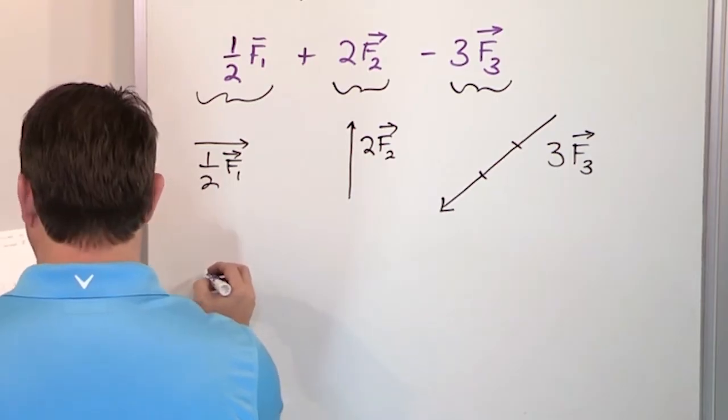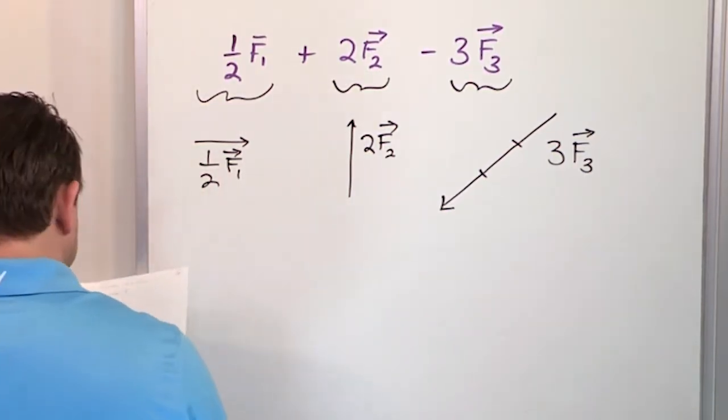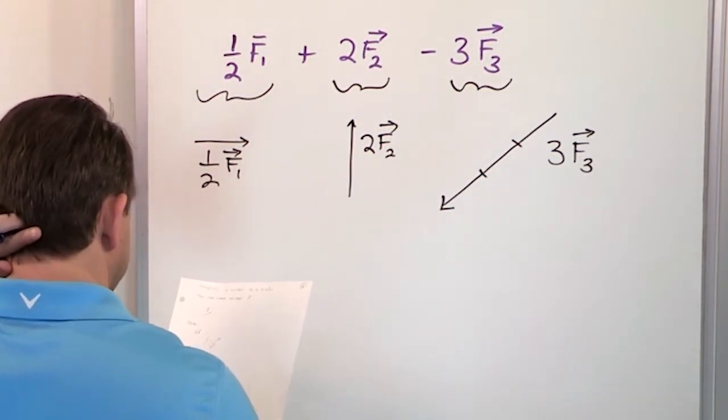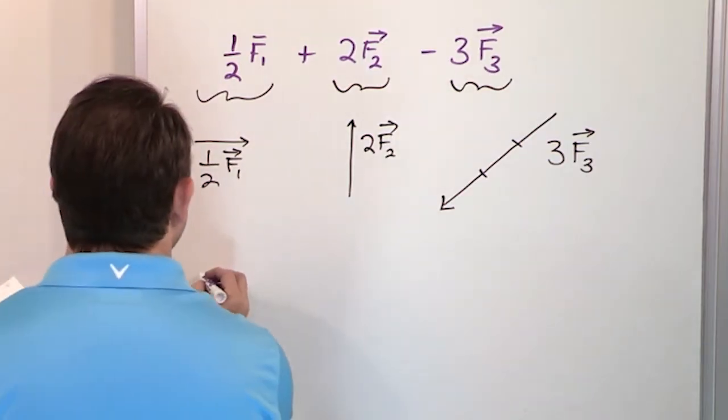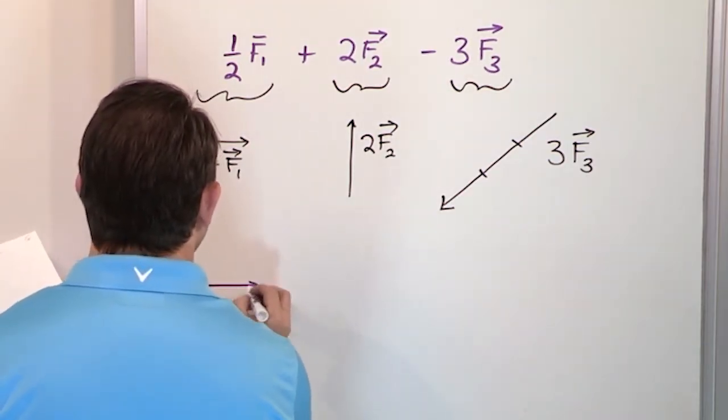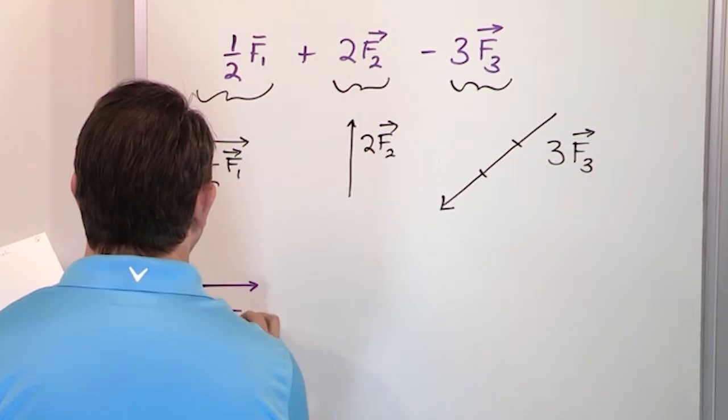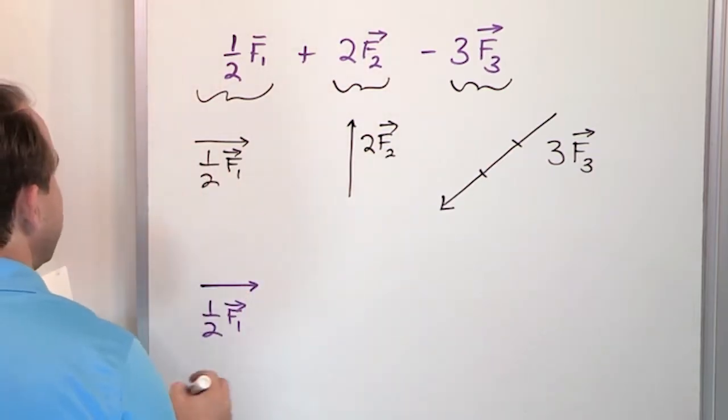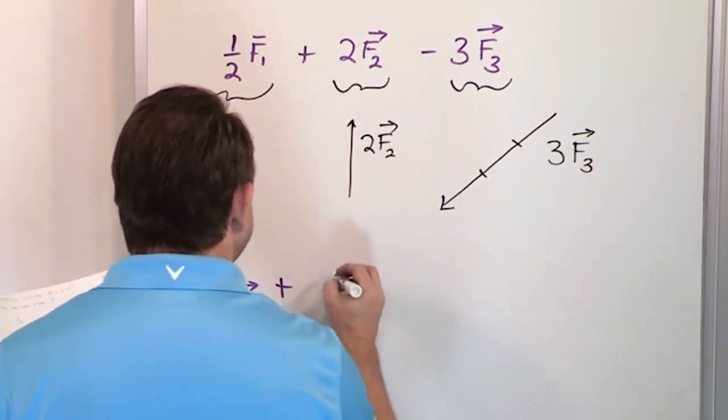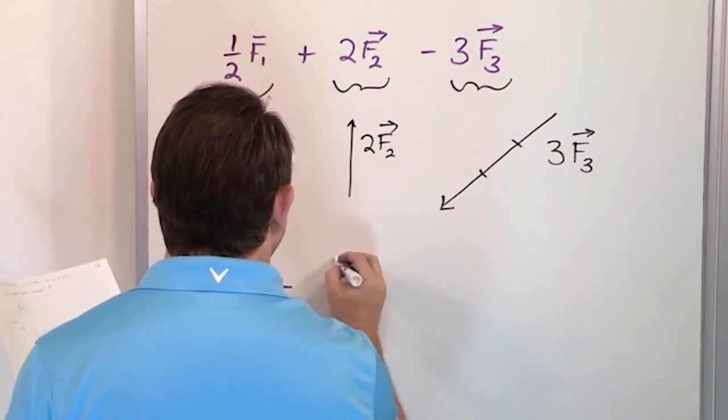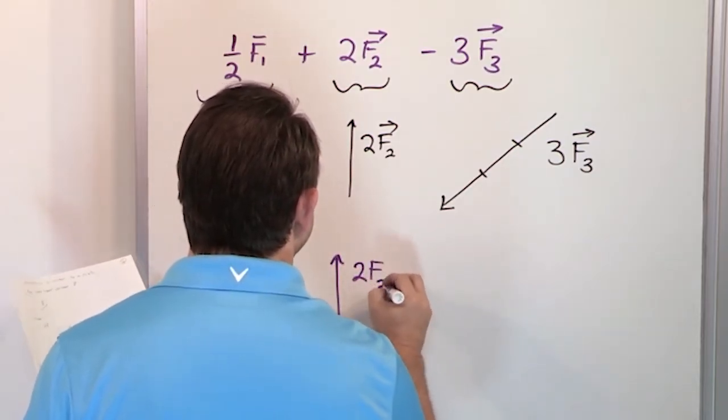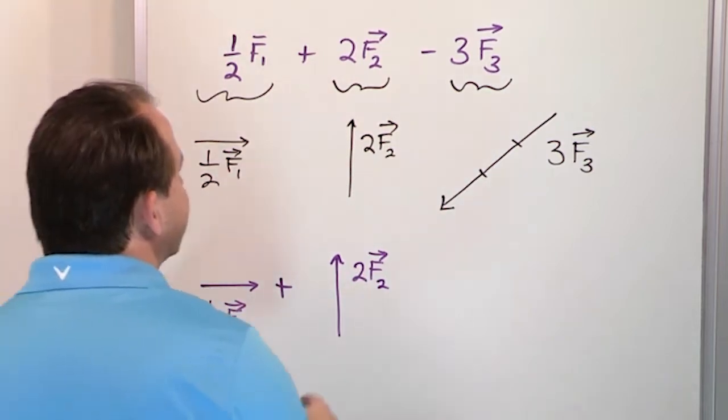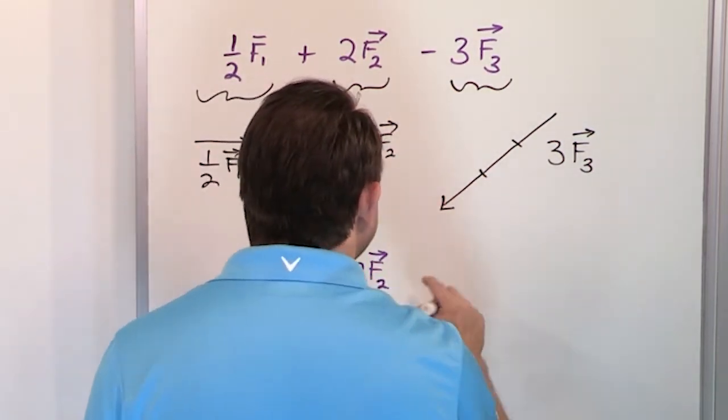If I'm going to add these guys together, then it would be this guy over here, which is one half times F1. Adding it, I'm going to rewrite the exact same second vector over, because it's the same thing, nothing has changed. But for the third vector, I know that I can't really do that subtraction so easily, I'm going to change it to addition, but in order to do that, I've got to flip this guy around.